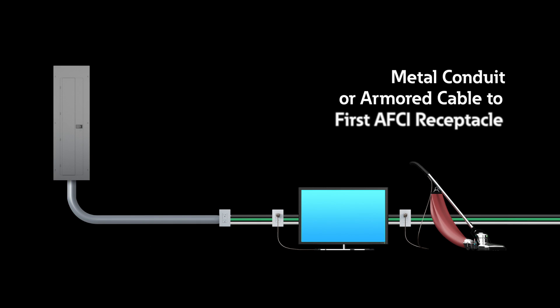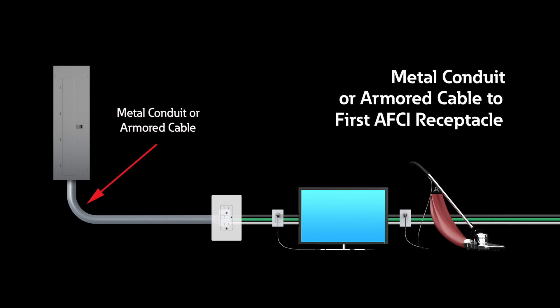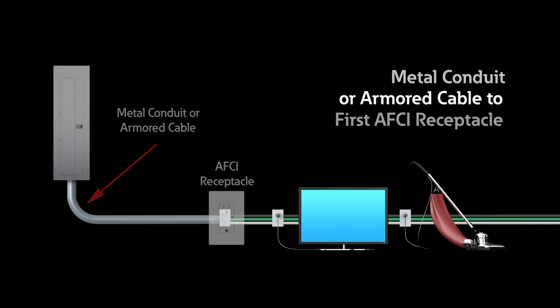Metal conduit or armored cable to the first AFCI receptacle. This installation requires metal conduit from the panel to the first AFCI receptacle in a circuit. This allows for local reset capabilities, but installation of conduit can be costly and impractical in many applications. However, this may be the most practical application for dormitories, hotels, or other commercial applications.